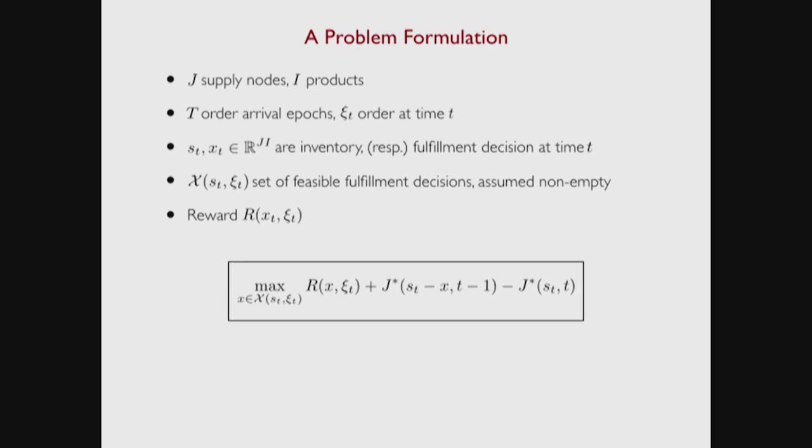We have some feasible set of fulfillment decisions, which is a function of my inventory position ST and the order coming in CT — I'll denote that set as script X. I'm going to assume the set is not empty, which is typically easy to do. If you can't fulfill something, you're going to cancel it, and I can model canceling by having some node with infinite inventory. Associated with every fulfillment decision XT and order CT, I have some reward. This reward can capture a lot of different things — clearly it should capture how much it costs you, potentially how quickly you got the stuff to the customer, and things related to your internal operations.